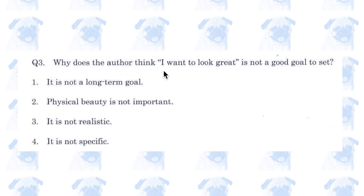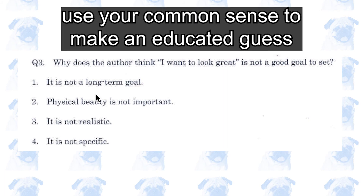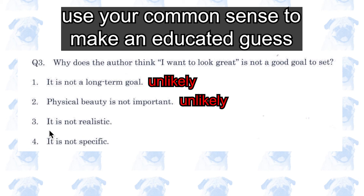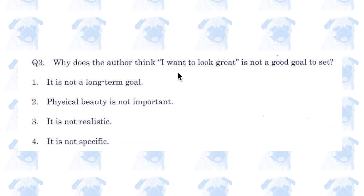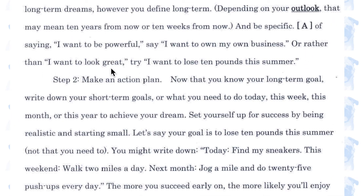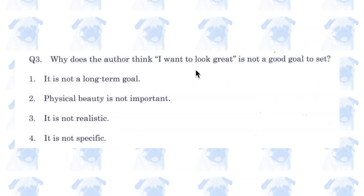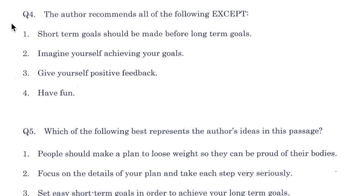Question 3. Why does the author think 'I want to look great' is not a good goal? 1: it is not a long-term goal. 2: physical beauty is not important — unlikely. 3: it is not realistic — unlikely. 4: it is not specific — possible. Looking in the passage: 'rather than I want to look great, try I want to lose 10 pounds this summer.' Going back a little, it says 'be specific'. So number 4 — saying 'I want to look great' is not specific enough.